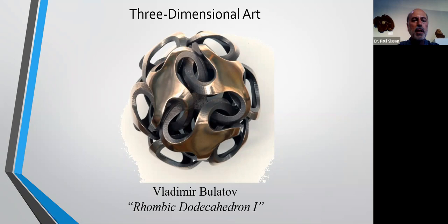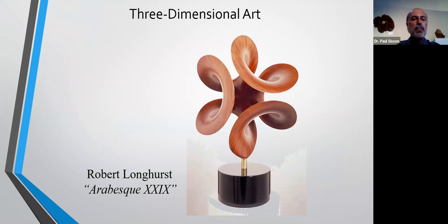This is a piece of jewelry by Bulatov. Some of you who have been going to math conferences for a long time have probably seen him — he showed up at many math conferences in the vendors area with really nice examples of mathematical jewelry. And this beautiful piece is by Robert Longhurst, who has made many mathematically striking sculptures. They've caught the attention of many mathematicians over the years.